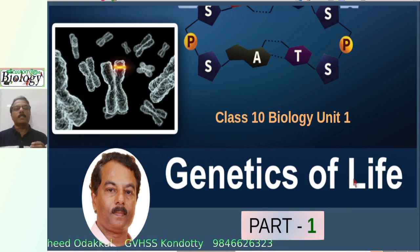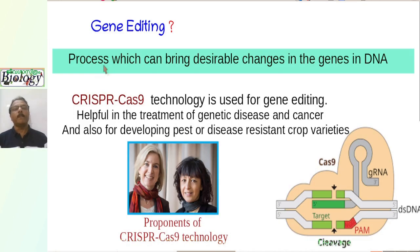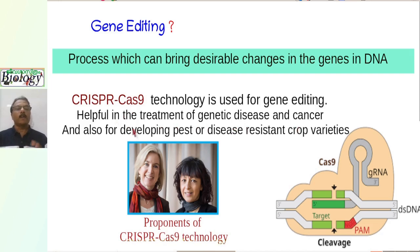At the beginning of this chapter, you can see the picture of Jennifer A. Doudna and Emmanuelle Charpentier for developing a methodology of gene editing. They won the Nobel Prize in 2020. Gene editing is the process which can bring desirable changes in the genes in DNA. Jennifer A. Doudna and Emmanuelle Charpentier introduced the technology CRISPR-Cas for gene editing.